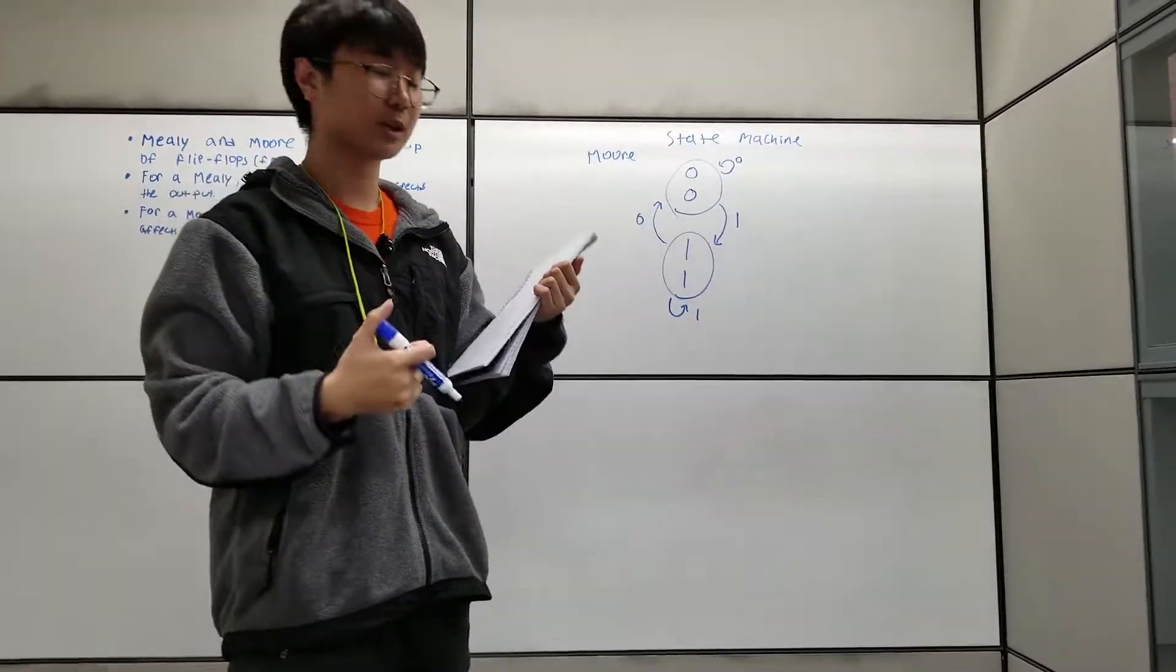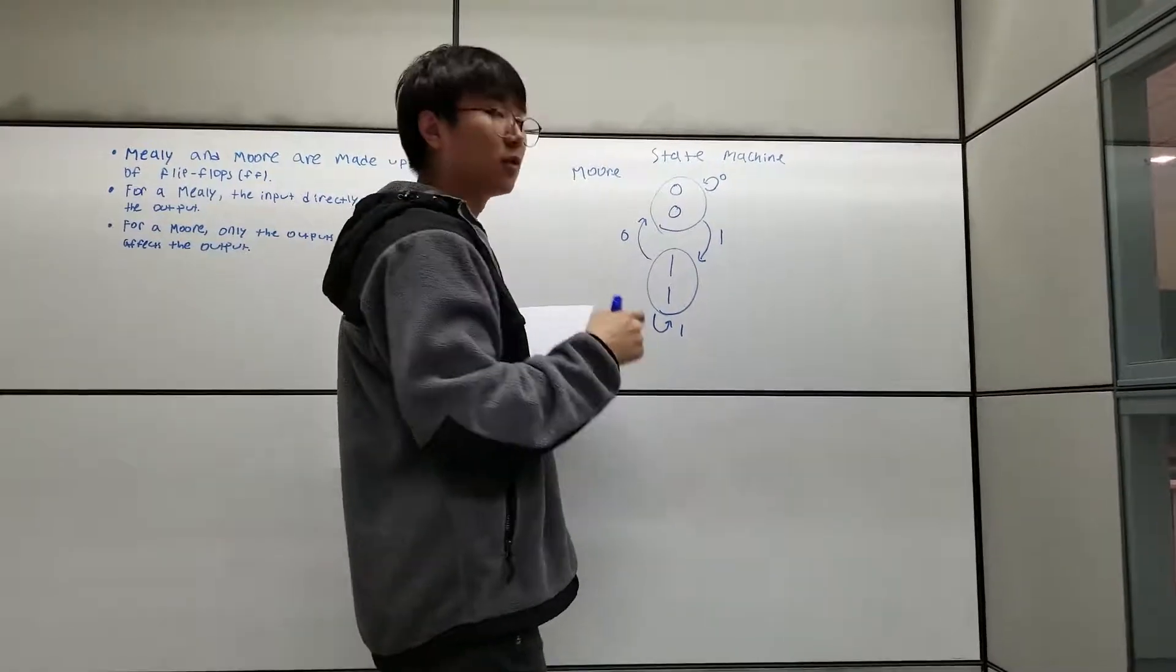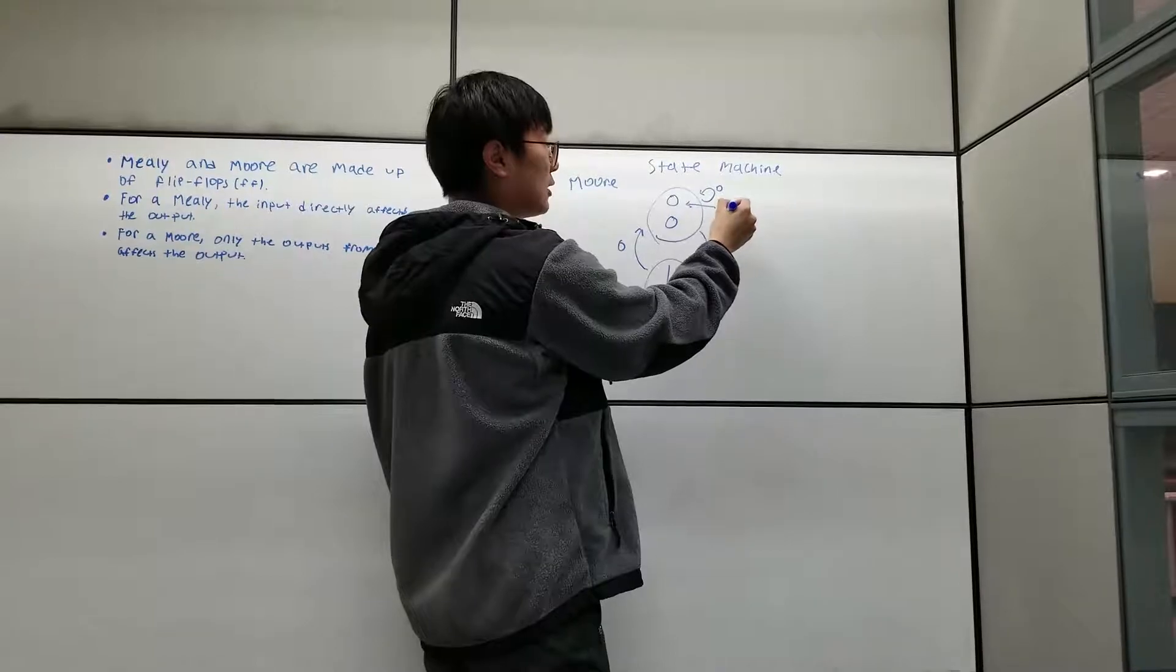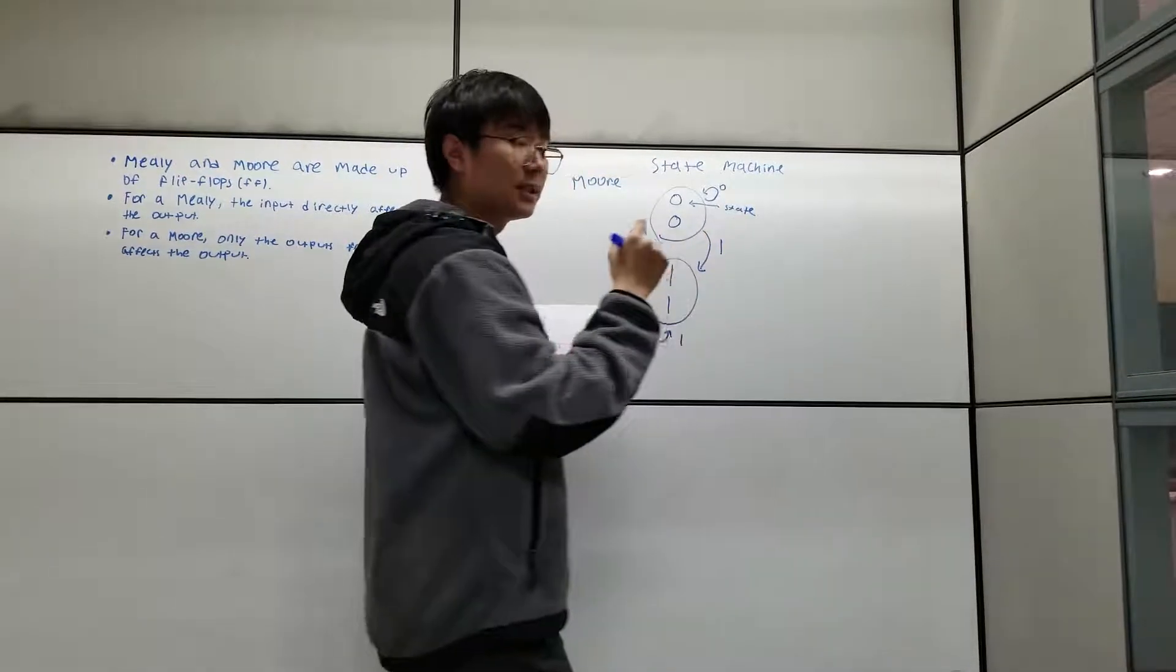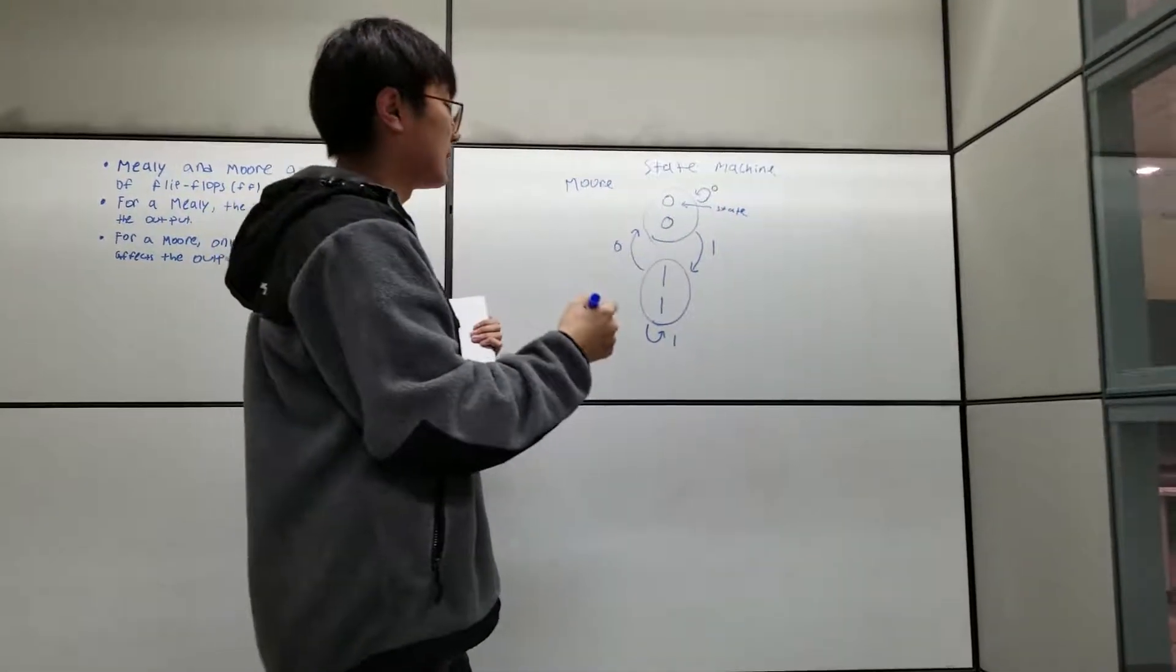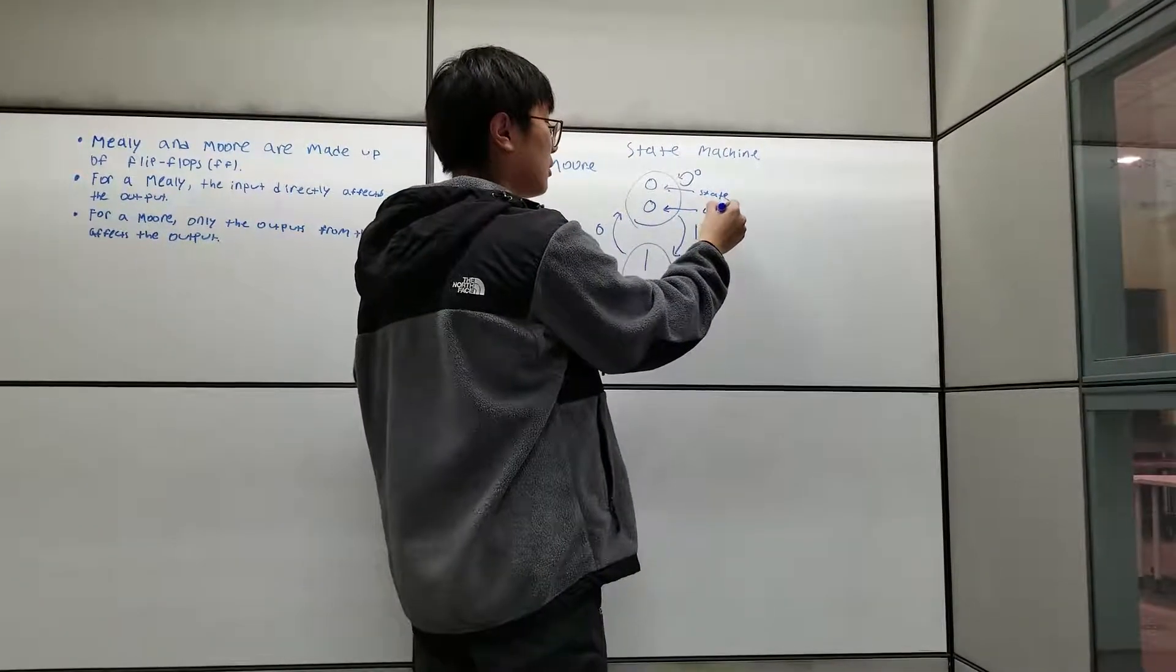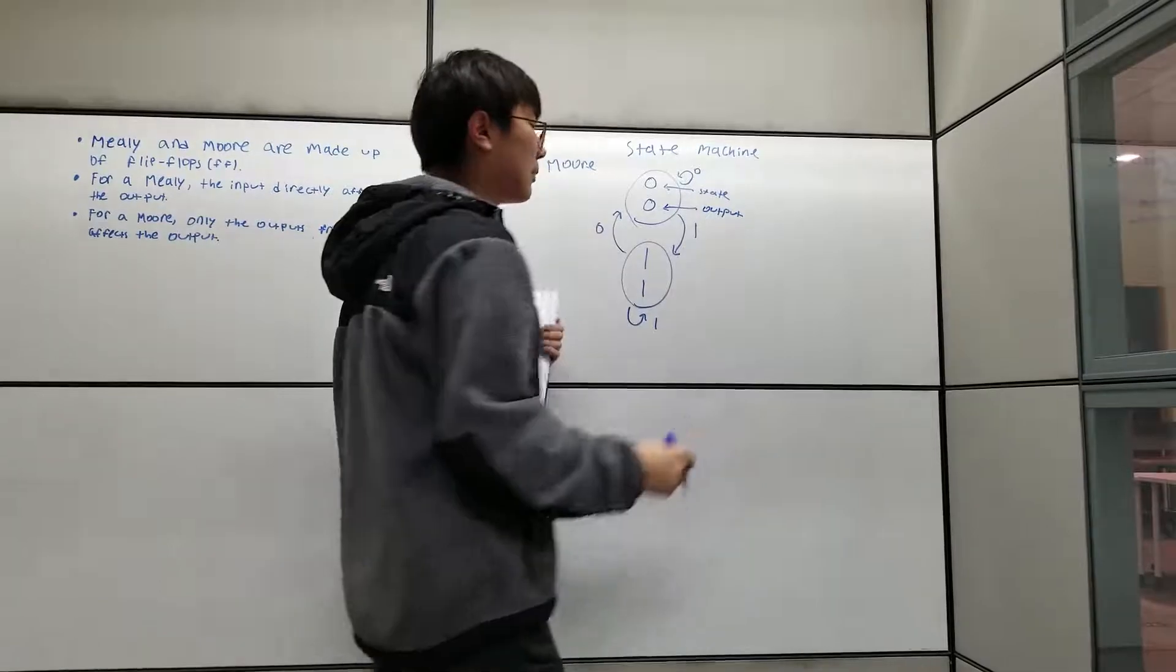And this here is a Moore state machine. For a Moore, this number represents the state at which it's in. The second number here, the bottom number, represents the output.